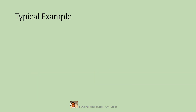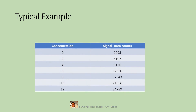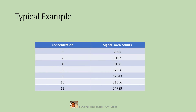Let us see one typical example. In this example, data from six replicate injections and one zero-concentration injection were considered. Concentrations are in the left column in a linear progression, and the respective responses as area counts for the impurity are given in the right column. Let us do the data analysis for this data as described.